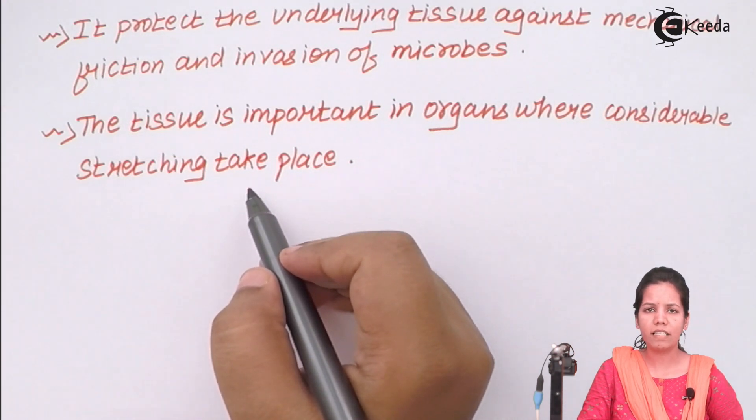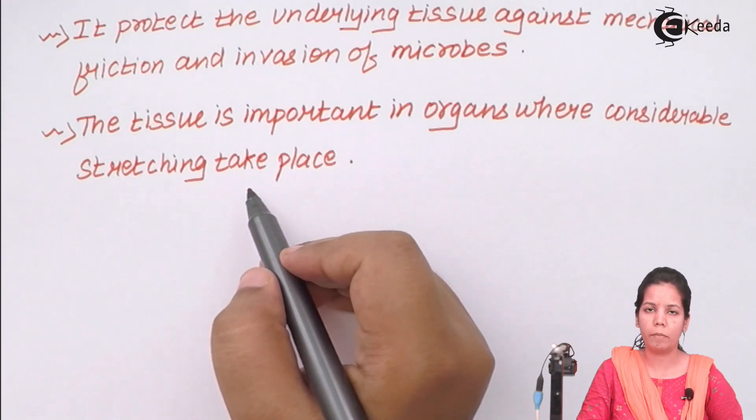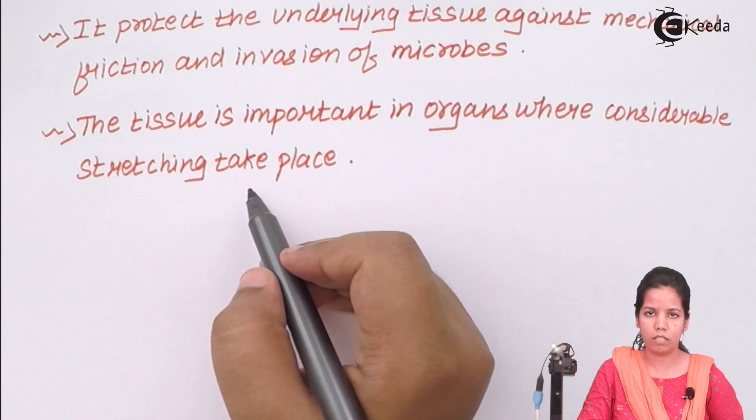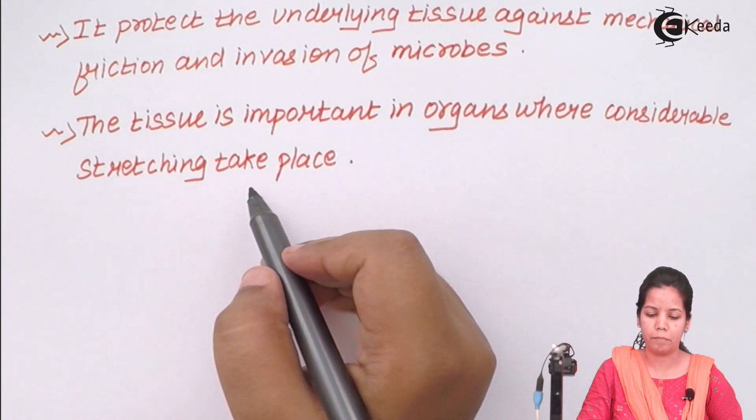When stretched a little bit and a sprain happens, Transitional Epithelium gets back to normal or becomes inflamed for a certain period of time.